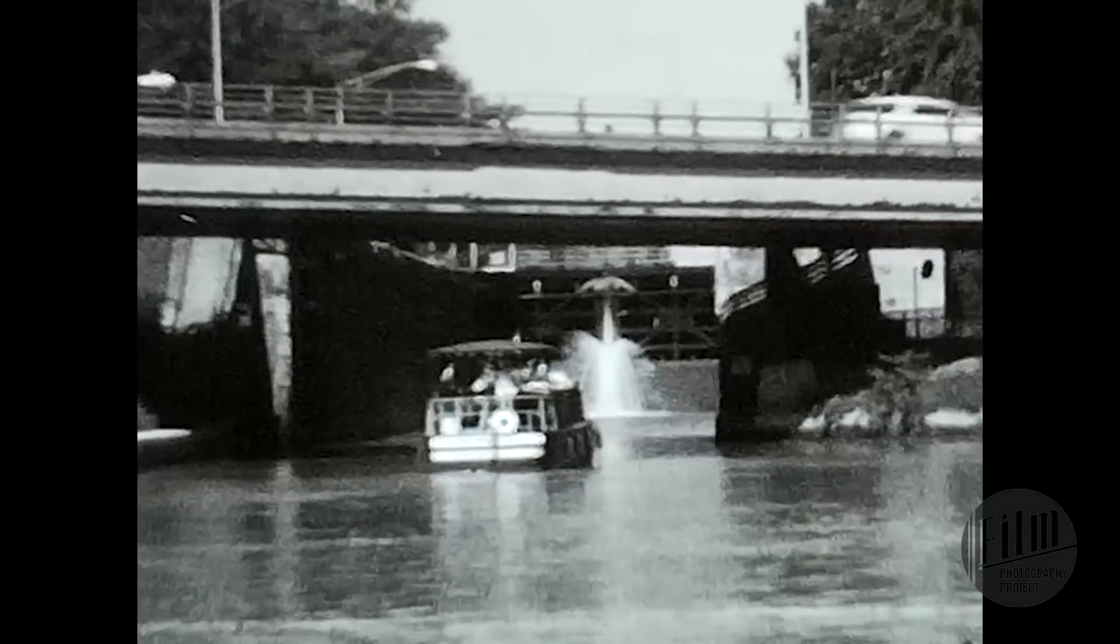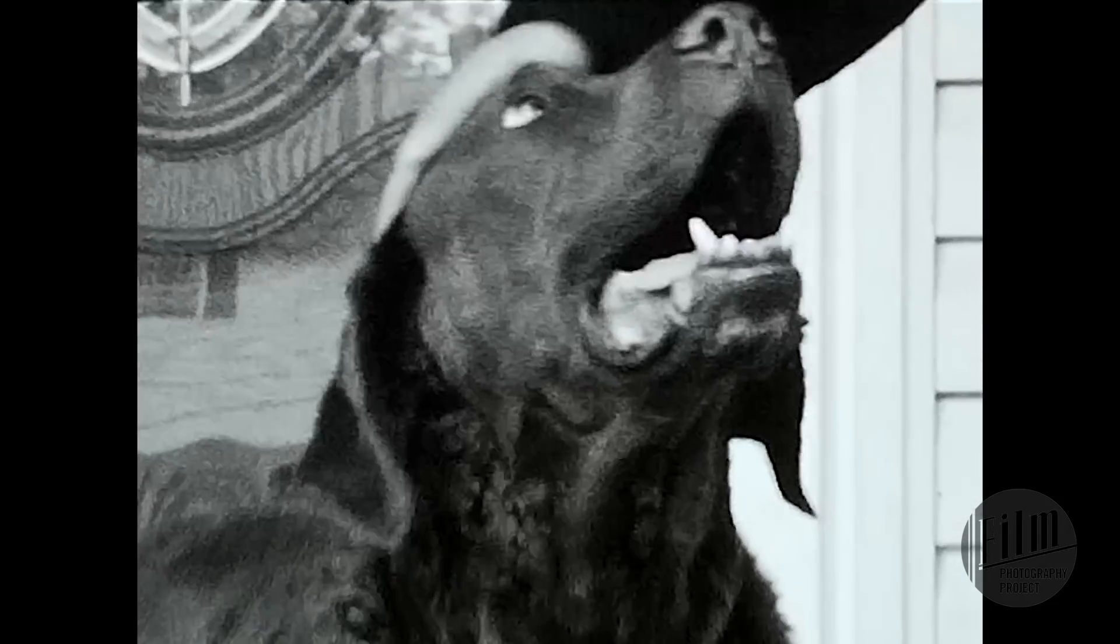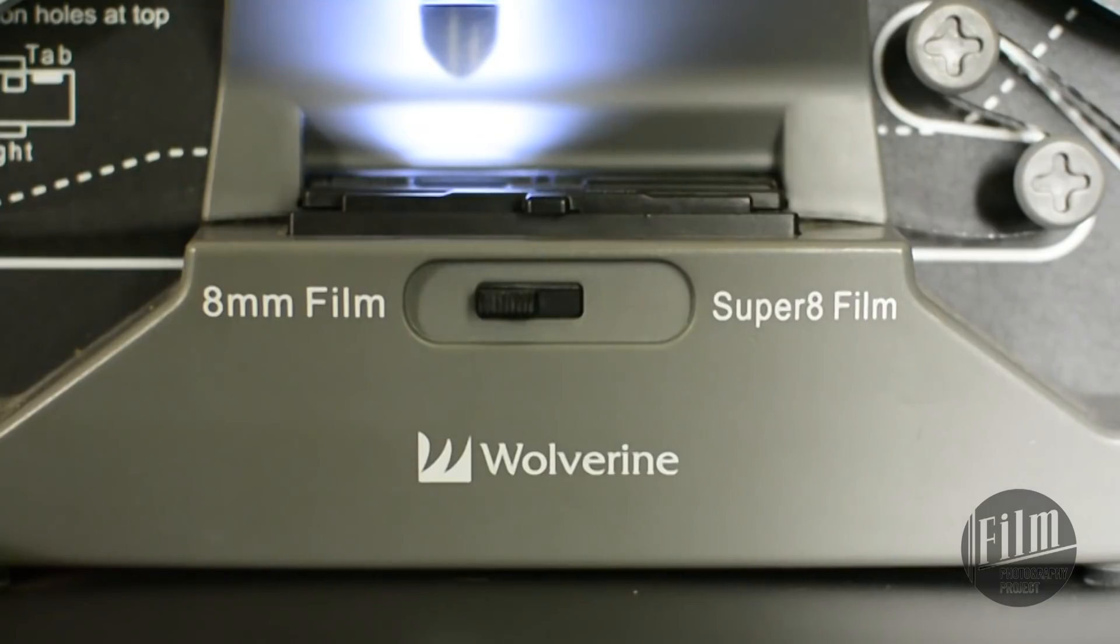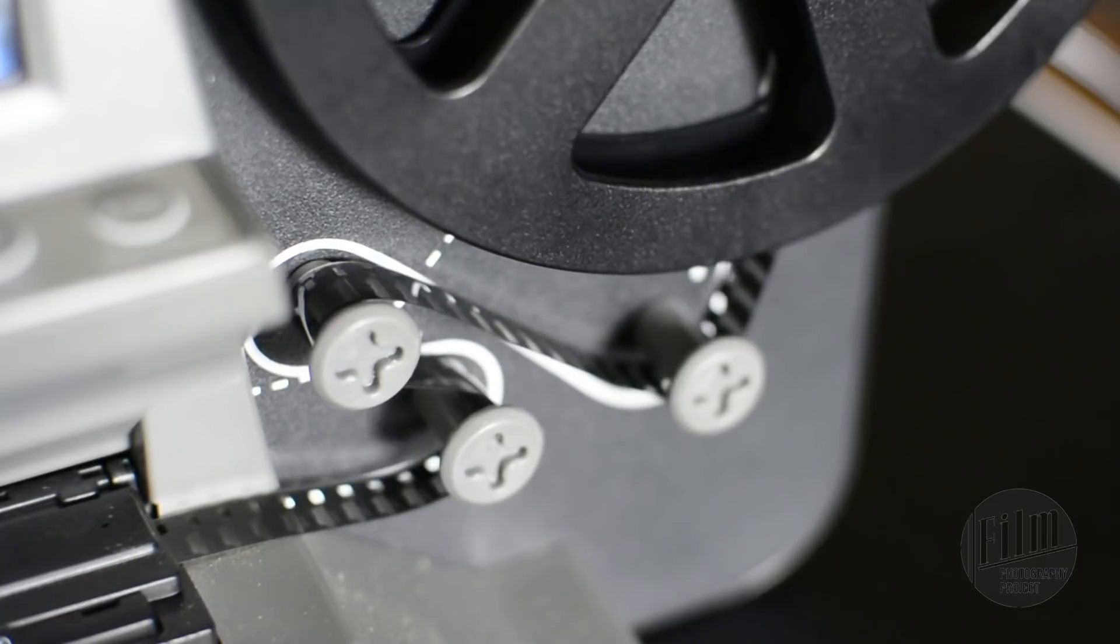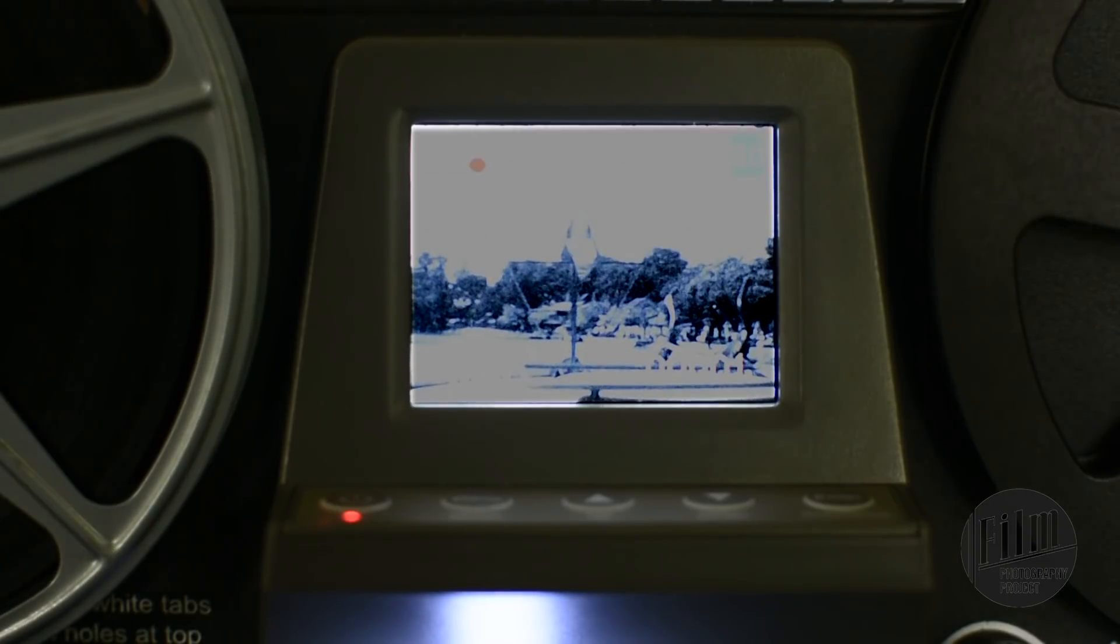Oh, and if you want to scan your film, you have a couple of options. One is to send your film to a professional lab. Or you can invest in something like this. This is the Wolverine Movie Maker, and it's the one that I use at home. It scans at about 720p. It's not professional quality by any means, but it's a great gadget for the home movie enthusiast.